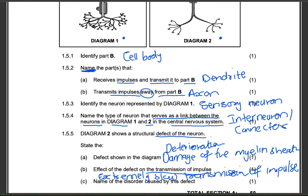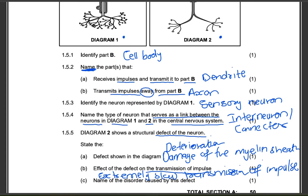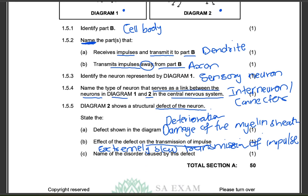Name the disorder caused by this defect — the damage of the myelin sheath. This is a very popular question. Multiple sclerosis. That's the name of the disorder. Let's look at the second question.